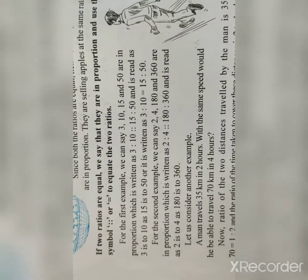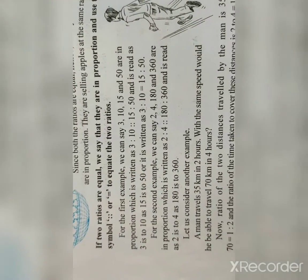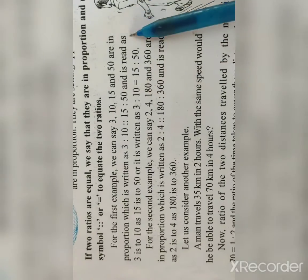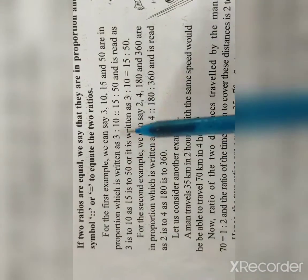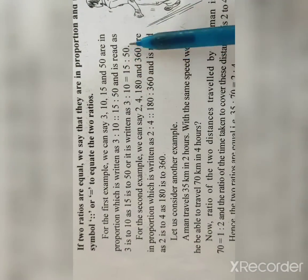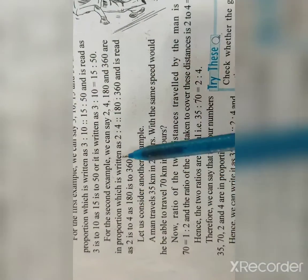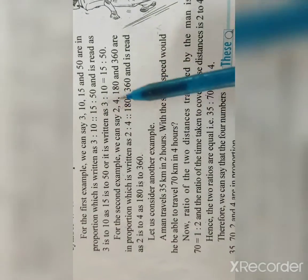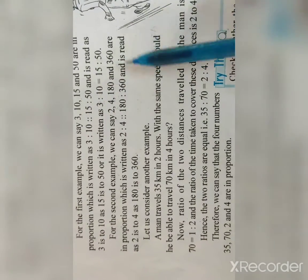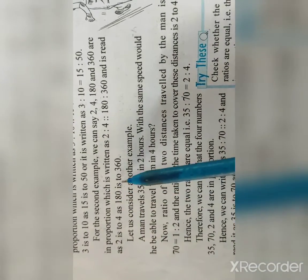For the first example we can say that 3, 10, 15 and 50 are in proportion, written as 3 is to 10 as 15 is to 50, or 3 is to 10 equals 15 is to 50. In place of the proportion symbol we can use the equal sign. For the second example, 2, 4, 180 and 360 are in proportion, written and read as 2 is to 4 as 180 is to 360.